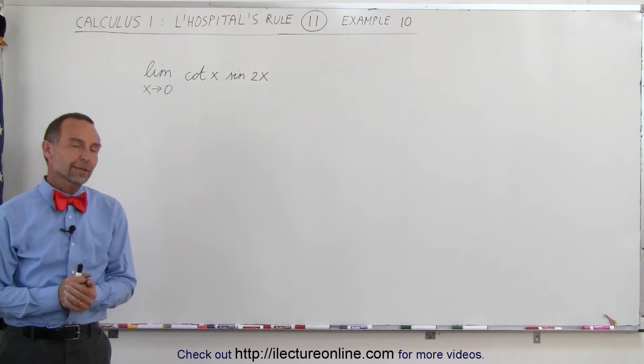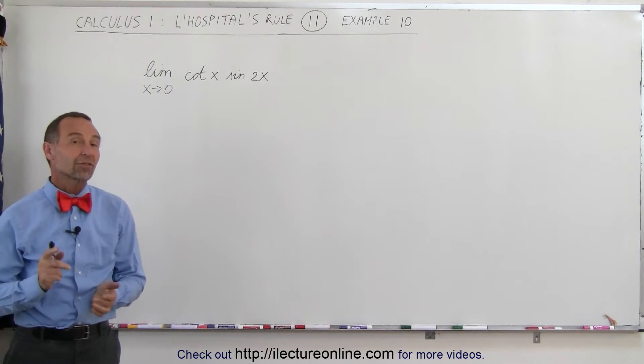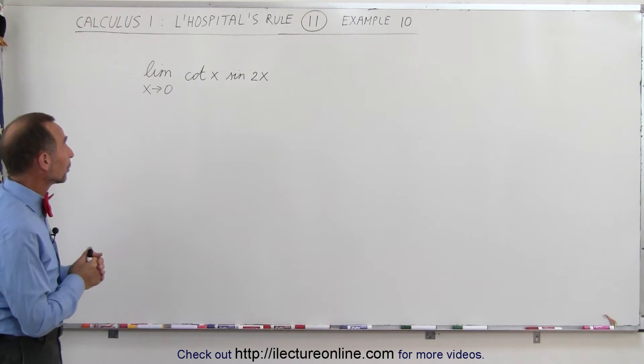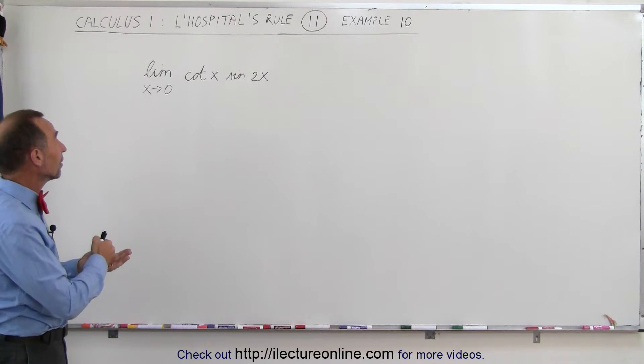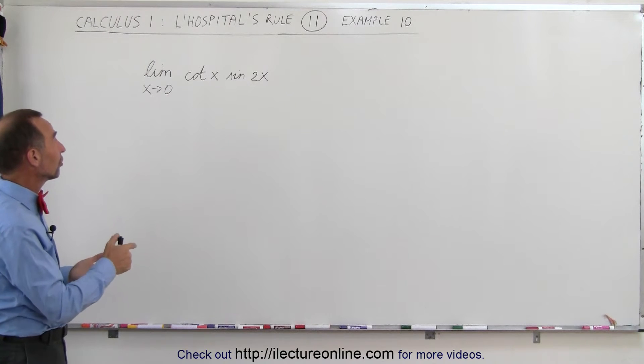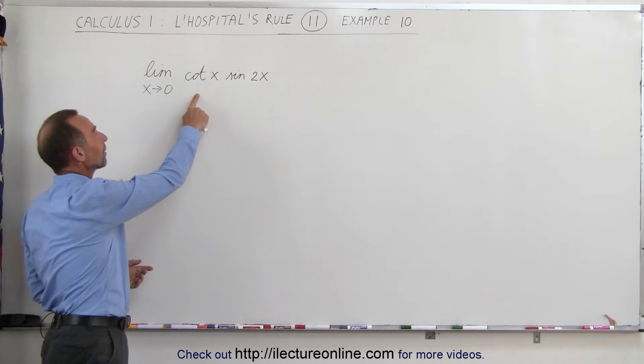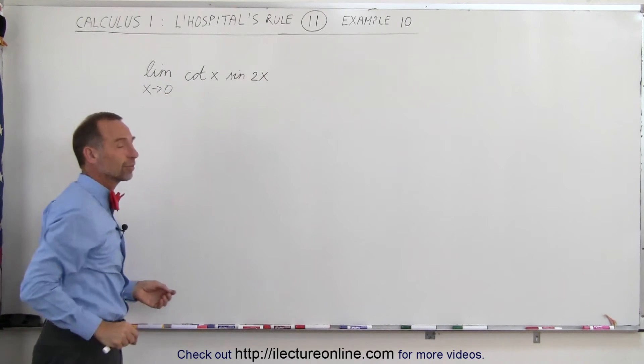Welcome to ElectronLine! Let's take a look at this problem right here. We're taking the limit as x approaches 0 of the cotangent of x times the sine of 2x.